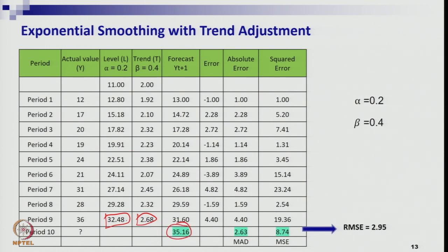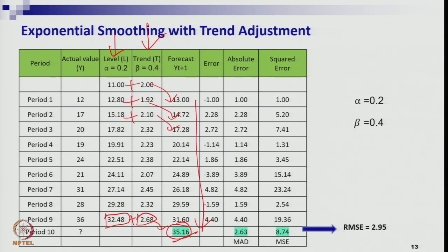The forecast using the Holt model is obtained by calculating two component series — level and trend — therefore it is called a double exponential smoothing model. Both series are calculated every iteration and added to get the final forecast. The forecasts show an increasing pattern: 13, 14.72, 17, 20, 22, 24, 26, 29, 31, 35 — effectively capturing the uptrend. This is the advantage of the Holt model, which takes care of the trend analysis aspect.